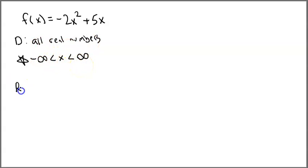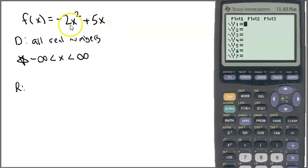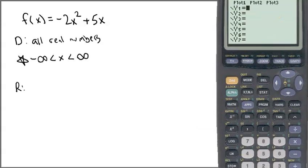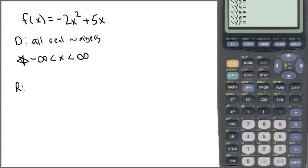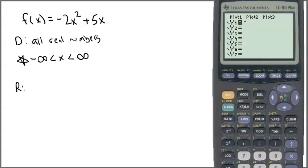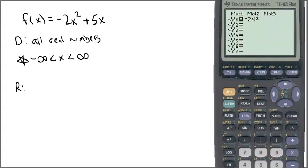Now the range is a little bit trickier. We don't have some tools yet to figure out what the range is, so we're going to look at the calculator. We're going to type this in the calculator: negative 2x squared plus 5x. I'm going to graph this.